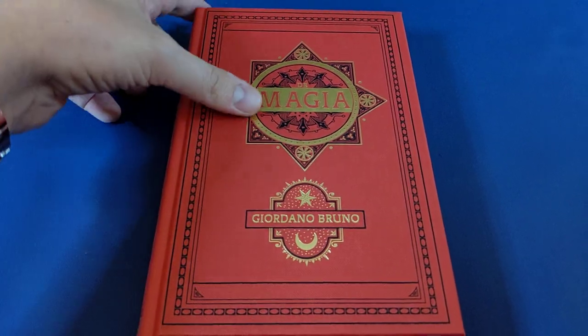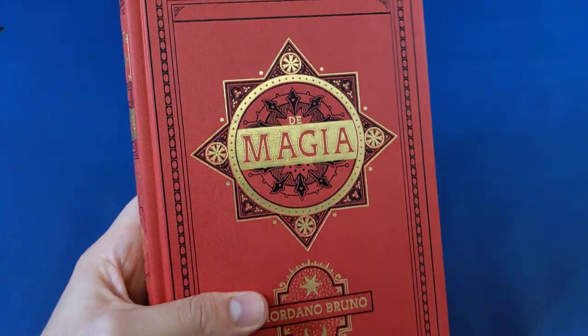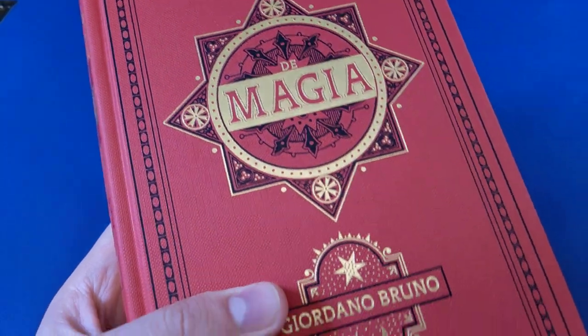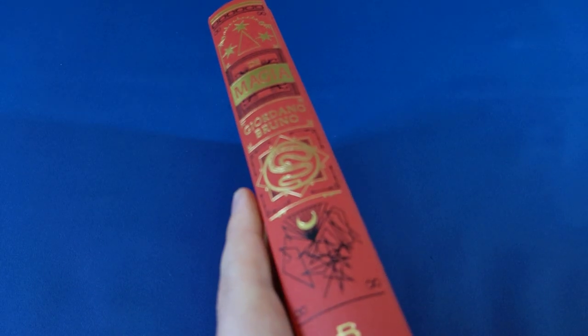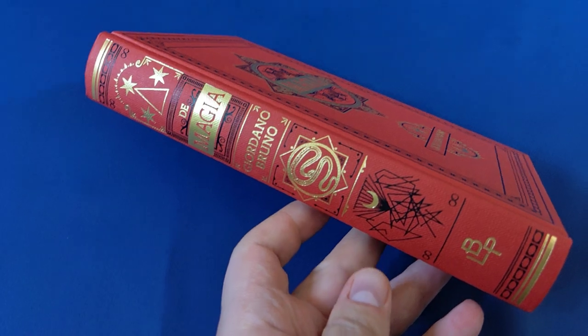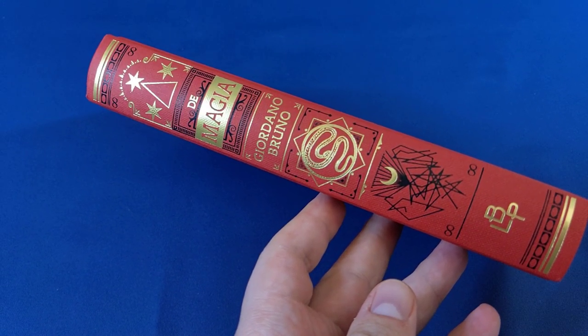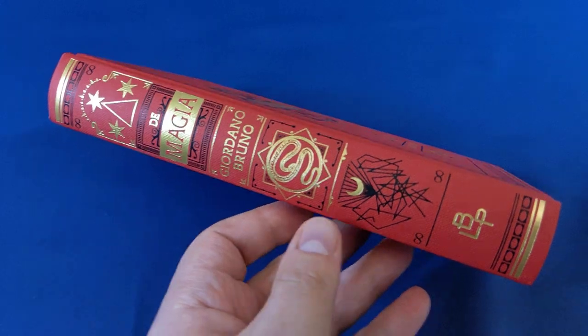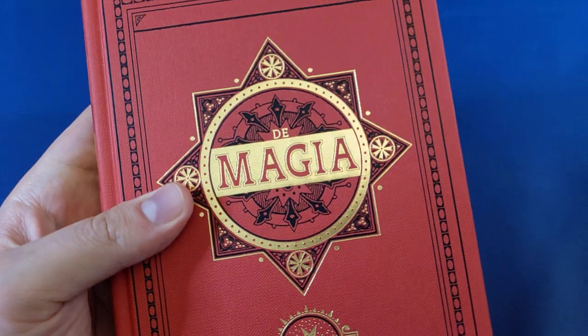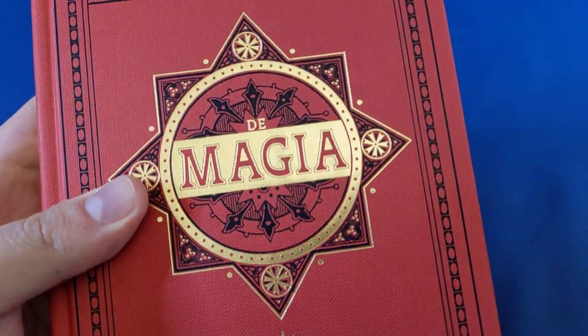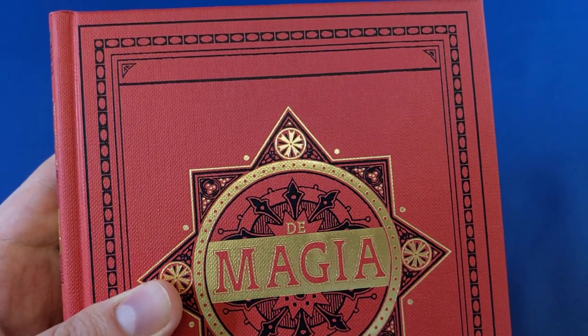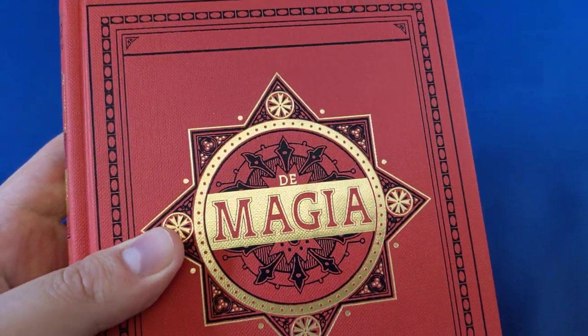De Magia by Giordano Bruno. This book was kickstarted by Black Letter Press last year and backers have now received their copies. It's now possible to order the book directly through Black Letter Press's website and it's a beautiful book, just like very many of Black Letter Press's books. I can't really think of any of their books which aren't absolutely beautiful. I just wanted to give you a closer look at this lovely edition.